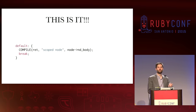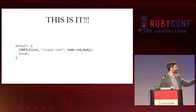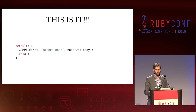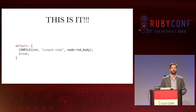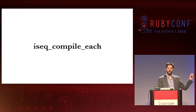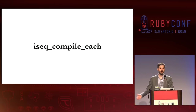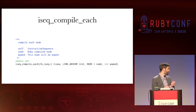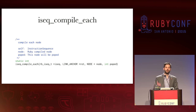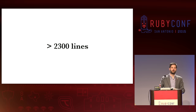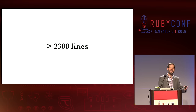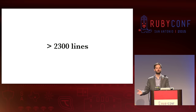This is the branch it actually follows — through a switch statement down to this default case that calls compile. Now compile is a macro, and I didn't put the macro in these slides because I really don't want to hurt you that much before lunch. Basically what it does is kick off the recursive process of the AST. We're going to walk that AST recursively and produce a linked list. The main function it calls is iseq_compile_each — this is our recursive function. This one function is over 2,300 lines long.